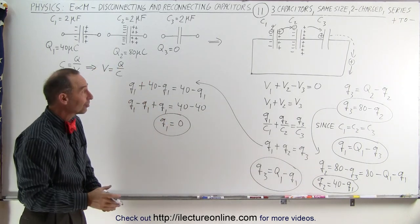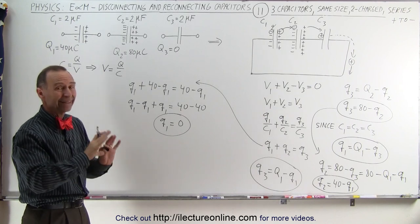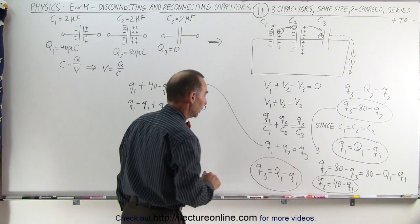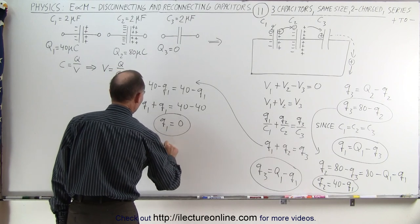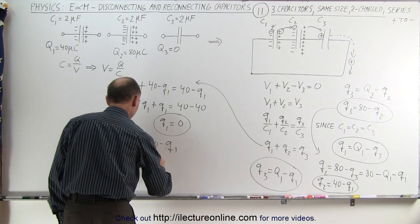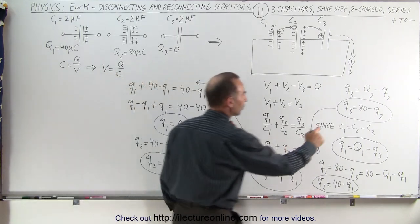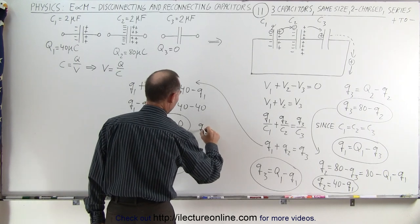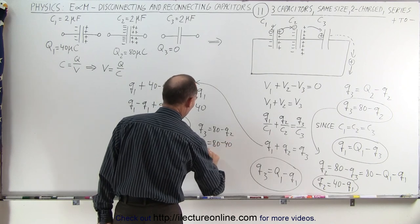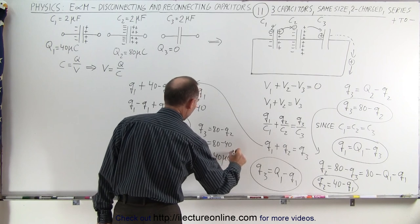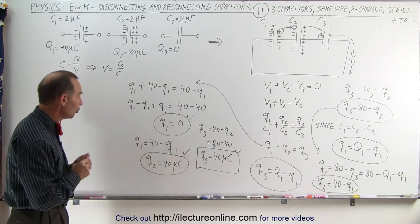How about that? It turns out that in this case, Q1 will end up with no charge whatsoever. At first you might think, is that really true? Can that happen? Well, let's stay with it and see what the others will become. So now we have Q2, which is 40 minus Q1. And since Q1 is equal to zero, Q2 is equal to 40 microcoulombs. And then Q3 is 80 minus Q2, which means it's 80 minus 40, or Q3 is equal to 40 microcoulombs. So here we have the three equations telling us values for Q1, Q2, and Q3.